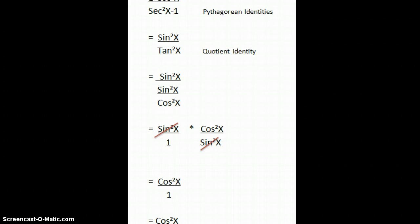you're going to get sine squared x over tangent squared x. Then you're going to use a quotient identity to expand tangent squared x into sine squared x over cosine squared x. Then, since we have a double stacked fraction, we're going to flip and multiply. When we do that, our sine squared x's cancel. We get cosine squared x over 1, which is cosine squared x.